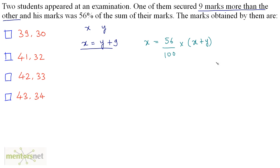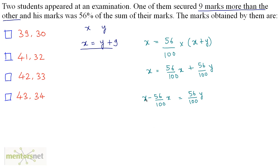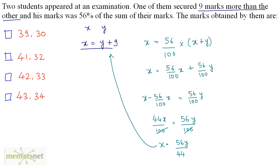We need to find both x and y. Expanding: x equals 56 upon 100 times x plus 56 upon 100 times y. Bringing the x terms to one side: x minus 56/100 x equals 56/100 y, giving 44x upon 100 equals 56y upon 100. The hundreds cancel, so x equals 56y upon 44. Substituting into x equals y plus 9 gives 56y upon 44 equals y plus 9.